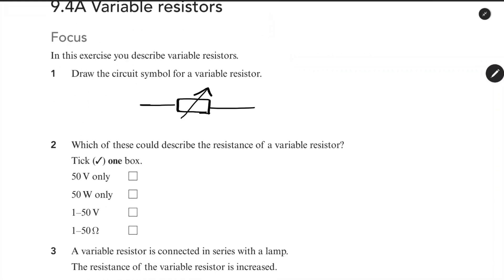Which of these could describe the resistance of a Variable Resistor? A fixed resistor has a fixed resistance value — for example, 50 Ohm, 60 Ohm, 100 Ohm, 1 Kilo Ohm. Variable Resistors have a range of resistance values; we can change the resistance — 10, 15, 20 — by adjusting a dial or knob. The correct answer is 1 to 50 Ohm.